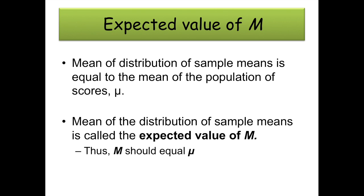The expected value of the mean: the mean of the distribution of sample means is equal to the mean of the population, mu. The estimated or expected value of the mean should equal whatever that population mu is. If you're sampling outside a Mensa meeting to test a smart pill, you're not getting a sample that approximates the population average — you need to include junior highs, high schools, and centers for people with developmental disabilities. Good random sampling means this expected value of the mean should be whatever the mu is.